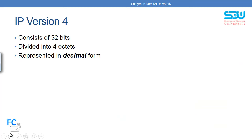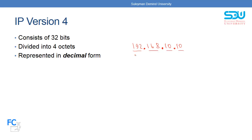IPv4 address consists of 32 bits and it is divided into four octets, represented in decimal form. For example, this IP address is represented in decimal form and it has four divisions, separated by dots. Each division is called an octet. So we have four octets and inside each octet we have eight bits, or one byte. In total we have 32 bits.